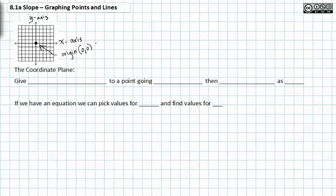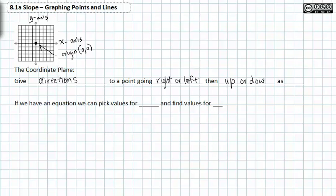So if we wanted to find a coordinate or find a specific place on a graph, we would have to be given an x coordinate and a y coordinate. On a coordinate plane, we can find a certain point by going to the right or left, and then up or down — written as (x, y). This means that if you're given directions, you head left or right, then up or down, and write those two values in the form (x, y).